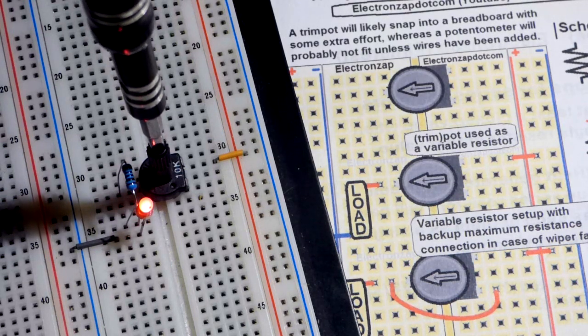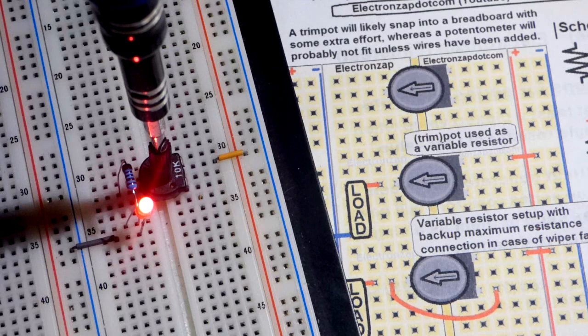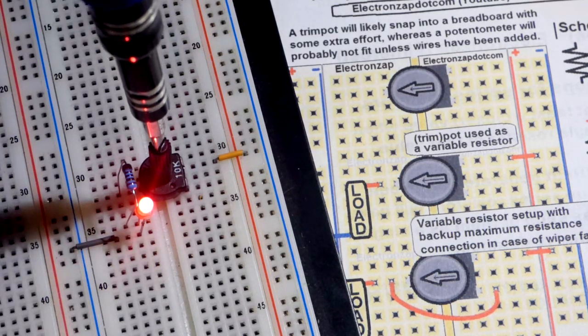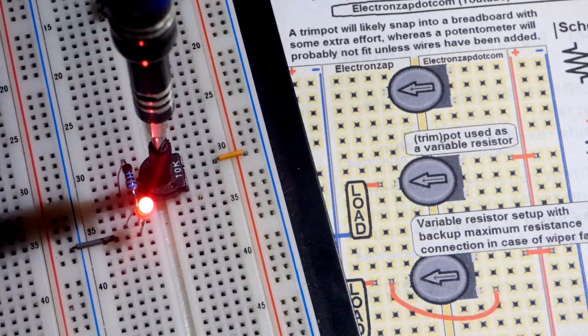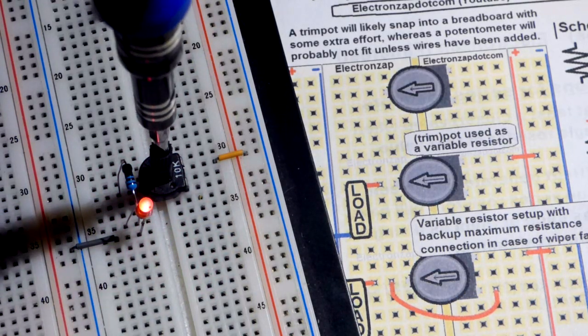It also has the trim pot, which is probably about 5,000 ohms of resistance. We lower it. You see it gets brighter. Now it's about 1 kilo ohm of resistance protecting the LED. Because we have that extra resistor there. About 0 ohms from the trim pot. We'll turn the trim pot all the way up.